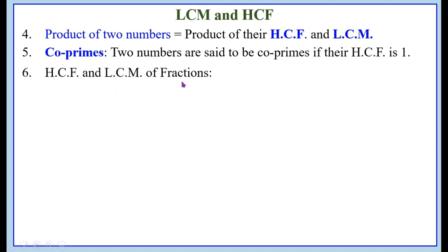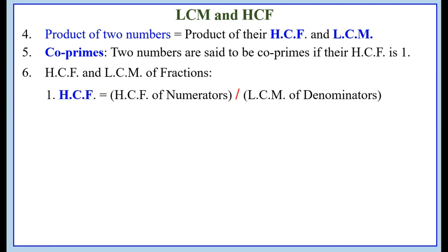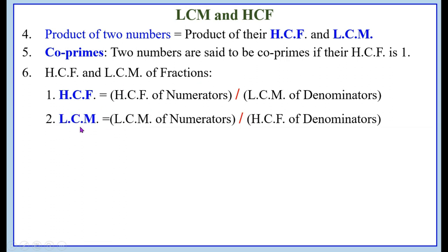HCF and LCM of fractions. Whenever two or more fractions are given, the highest common factor of the fractions equals HCF of the numerators divided by LCM of the denominators. The LCM of fractions equals LCM of the numerators divided by HCF of the denominators. So when finding HCF write HCF on top and LCM on bottom; when finding LCM write LCM on top and HCF on bottom.